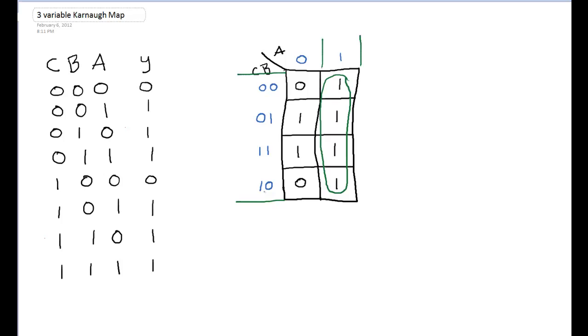Now, any variables that don't stay the same over the domain of that loop basically are redundant and are eliminated. So in this case, we see the a variable here is a 1, and the a is a 1 when c and b are 00, 01, 11, and 10. So the a and b clearly aren't a factor. Sorry, the c and b clearly aren't a factor. So they're all eliminated. So the variable for the green loop would just be a.